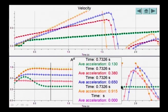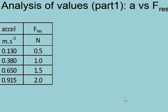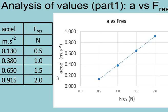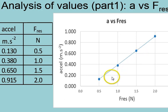One newton, one and a half and two newtons. So you need to record these values on your worksheet. The instruction then says to plot the acceleration versus resultant force. So you plot these values, acceleration versus resultant force, and they line up nicely in a straight line.